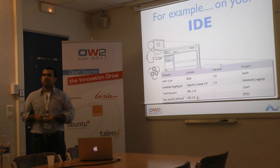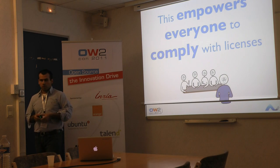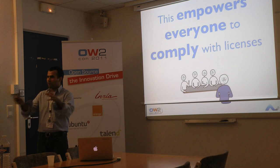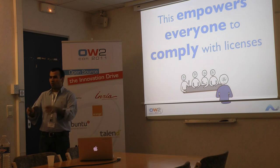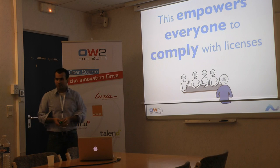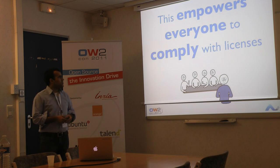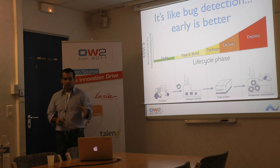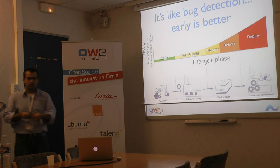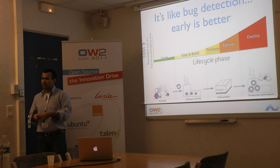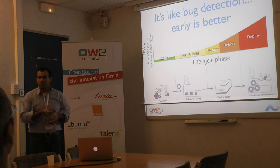The key benefit is that you empower everyone to comply with licenses. Everyone in your whole development life cycle is responsible for complying with licenses and improving the quality of the software. It's not just one person's problem — it's the whole team that is implicated. And as I like to say, it's like bug detection: early is better. The earlier you identify your bugs, the earlier you can correct them and the smaller the correction cost. It's the same with licenses. If you catch license issues while you are coding, you can save a lot of money because you don't go through the other steps in the process.